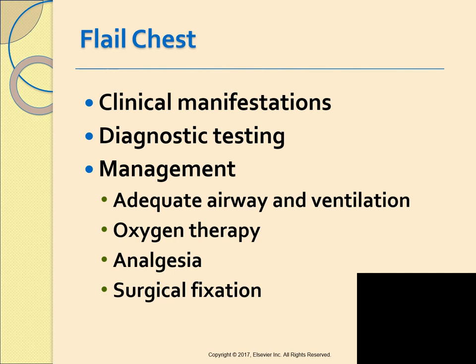A flail chest is usually apparent on visual examination. The patient will have rapid shallow respirations, tachycardia, and poor air movement. The thorax will appear asymmetrical and very uncoordinated. You can palpate for crepitus near the rib fractures and a chest x-ray will assist in diagnosis. Initial therapy consists of ensuring adequate ventilation and supplemental oxygen, giving analgesics to promote adequate respiration, and possibly mechanical ventilation. Surgical fixation of the flail section may also be performed if needed.